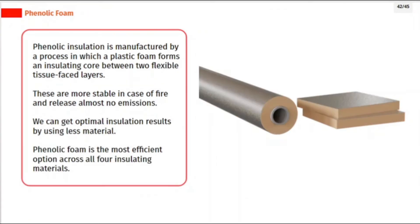Phenolic insulation is manufactured by a process in which a plastic foam forms an insulating core between two flexible tissue-faced layers. These are more stable in case of fire and release almost no emissions. We can get optimal insulation results by using less material, making phenolic foam the most efficient option across all four insulating materials.